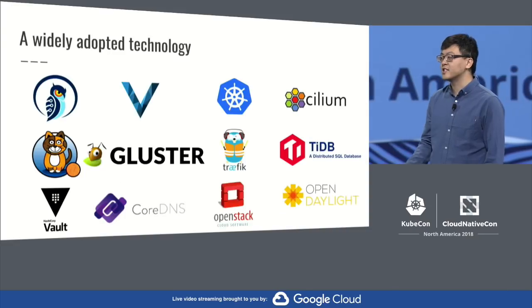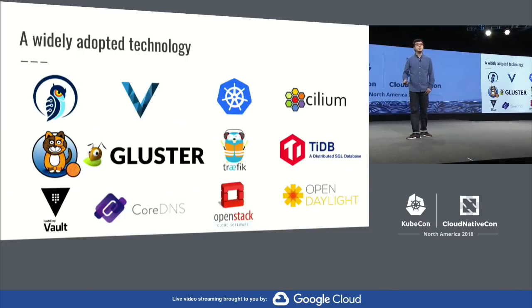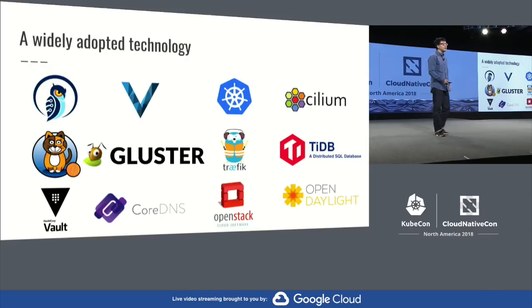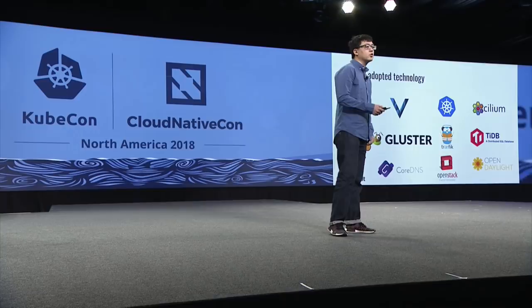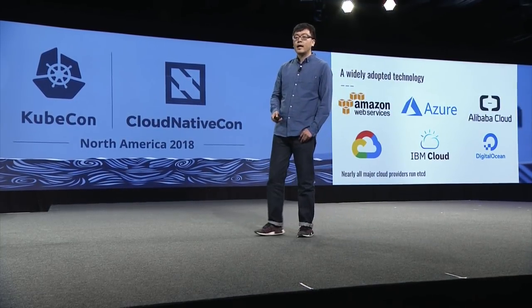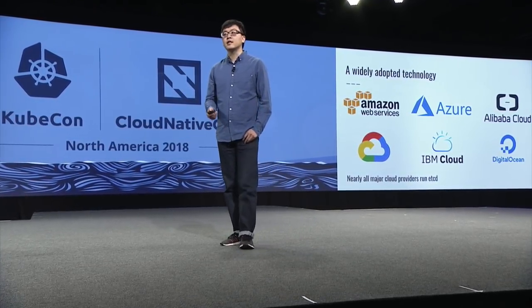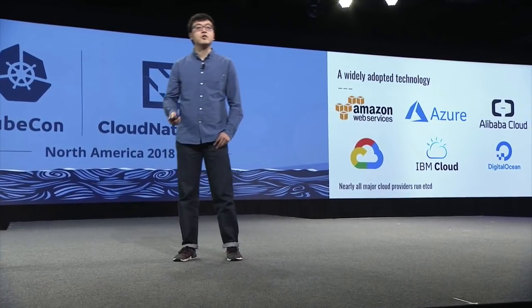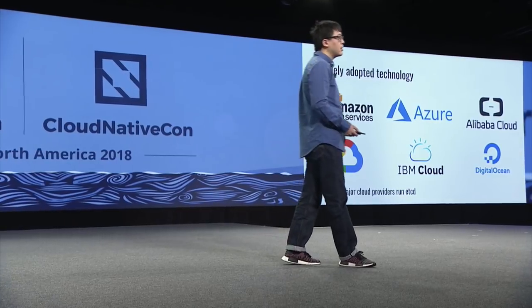Besides Kubernetes, many other cloud-native technologies have adopted etcd. For example, M3, a distributed time series database from Uber, uses etcd for service discovery and for metadata management. Vitess, a MySQL solution from YouTube, uses etcd to manage its topology. Many companies are running etcd in production today. Nearly all cloud providers are running etcd for their infrastructure and for their user-facing products. For example, at Alibaba, it runs etcd for the internal cloud manager, Sigma. On Alicloud, it runs etcd for the cloud container services.